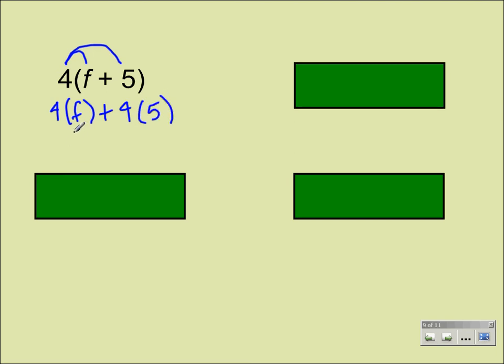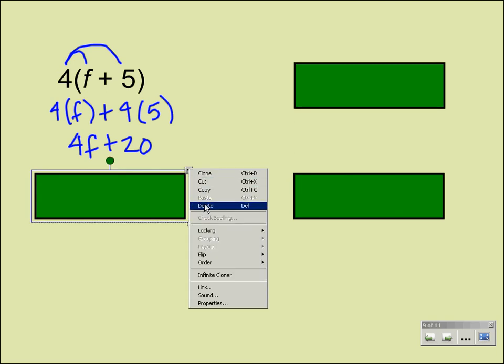Let's simplify that a little further. Here, 4 times F being 4F, and 4 times 5 being 20. Now, we can't simplify any further because they have nothing else in common, and they can't be further combined.